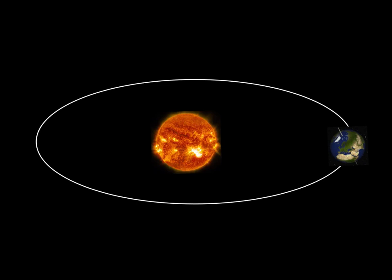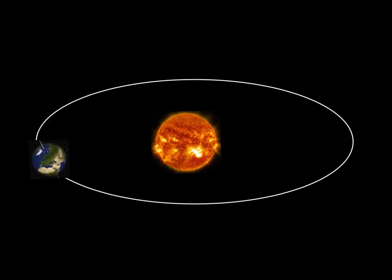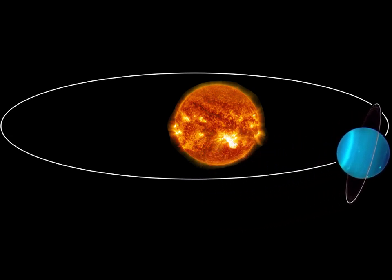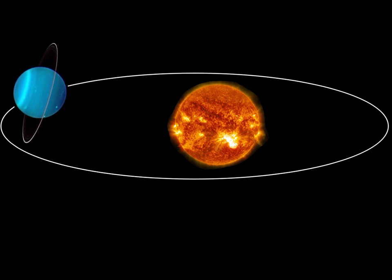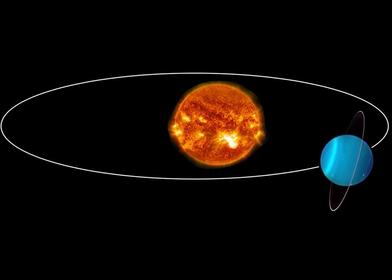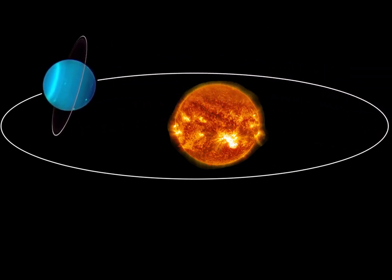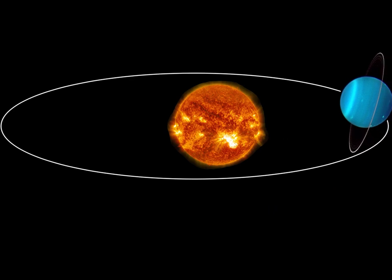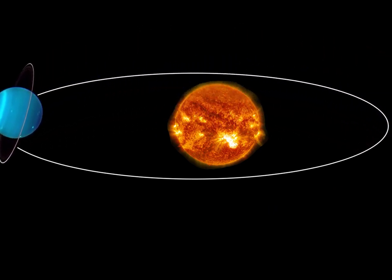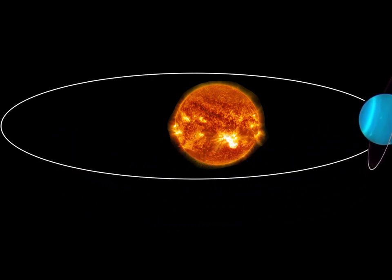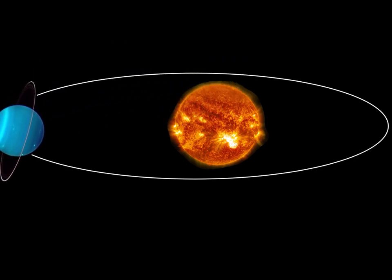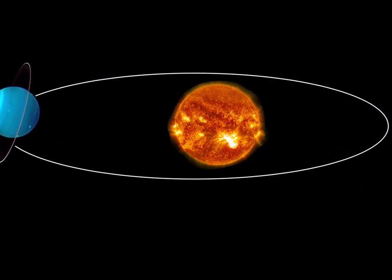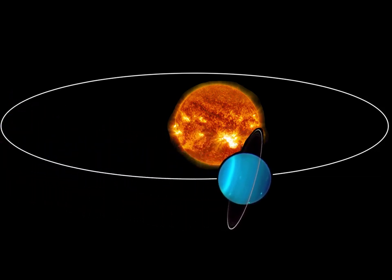Let's apply what we learned about Earth to another planet: Uranus. Uranus is revolving around the Sun, and notice its axial tilt also does not change — this is the same for all planets. However, it takes Uranus 84 Earth years to make it once around the Sun. The reason is that Uranus is so much farther away from the Sun, which is why it takes so much longer to travel along its elliptical orbit.